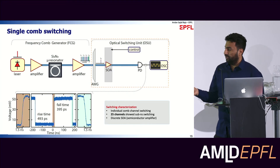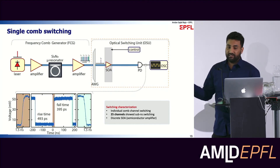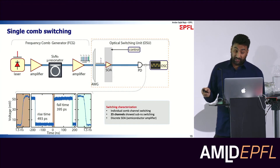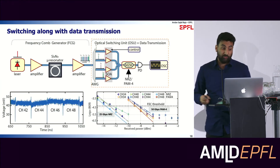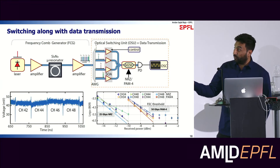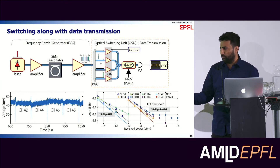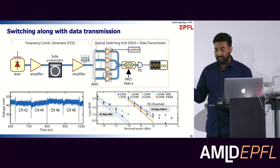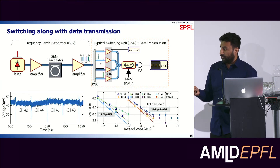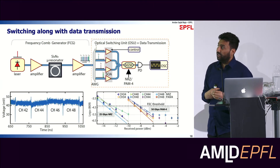For the actual switching experiment, we wanted to switch between different comb lines. We picked four different comb lines coming out of this microcomb and sent them through four SOAs, switching between the four lines. We needed to confirm switching at less than one nanosecond. We were able to switch channel 42, channel 44, channel 46, and channel 48 at less than one nanosecond. This showed that this system is quite usable for performing switching inside the data center.